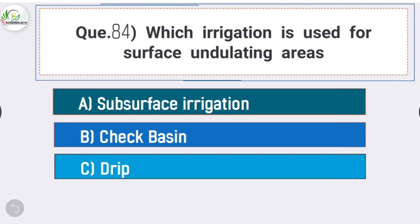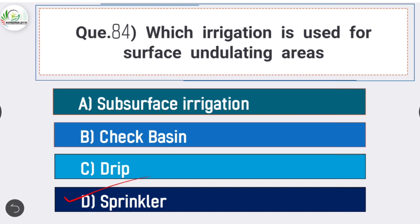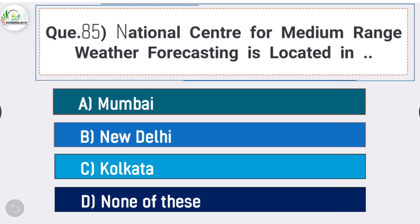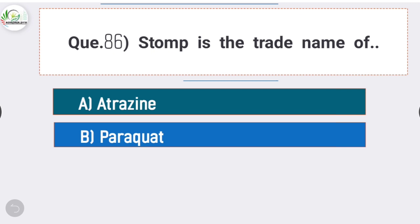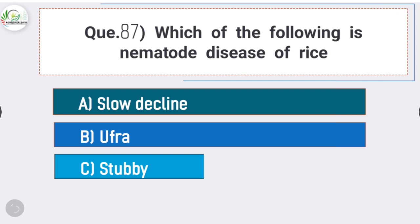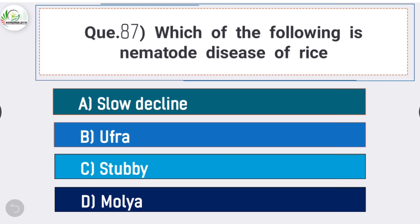Question number eighty-three: which of the following contributes to acid rain? Answer is option D - both nitrogen dioxide and sulfur dioxide contribute to acid rain. Question number eighty-four: which irrigation is used for surface undulating areas? Answer is option D - sprinkler. Question number eighty-five: National Centre for Medium Range Weather Forecasting is located in - answer is option B - New Delhi.